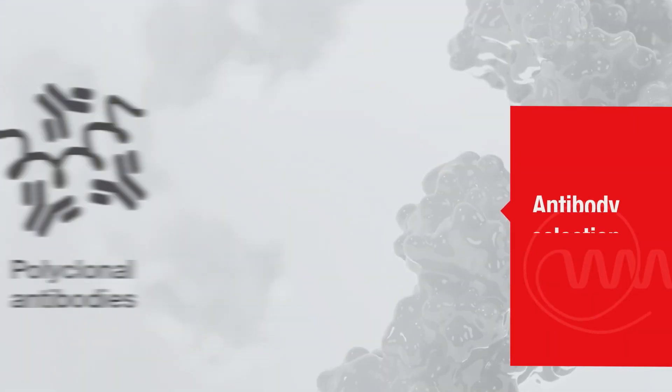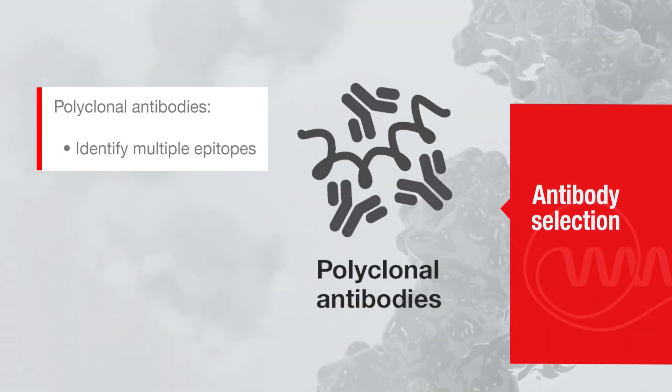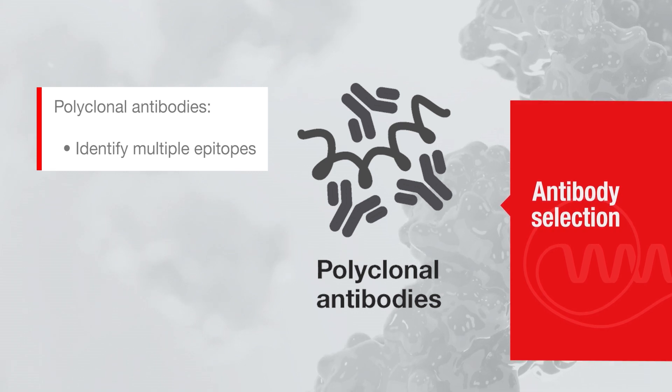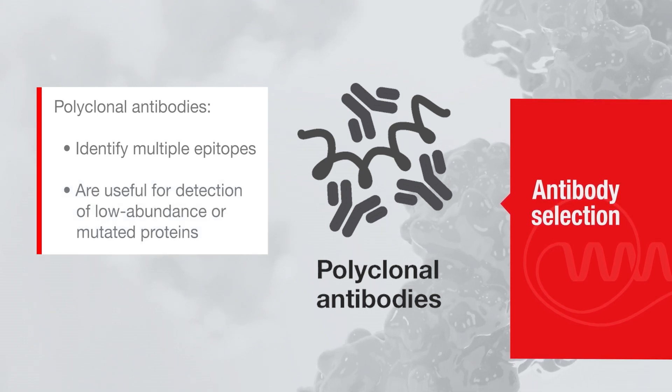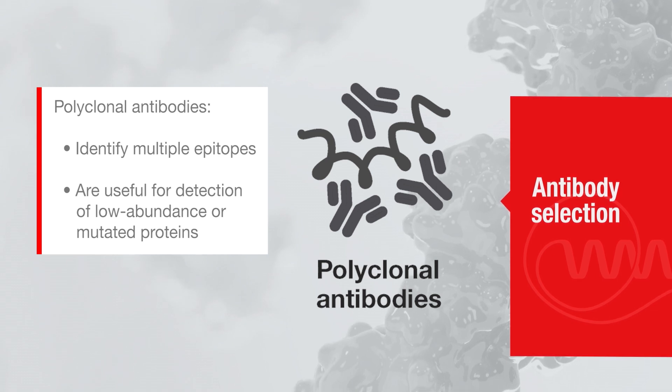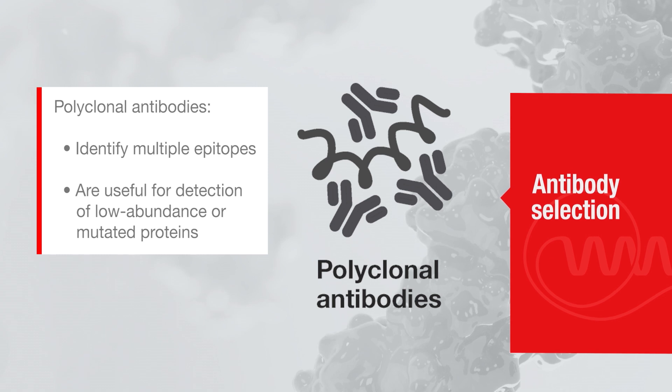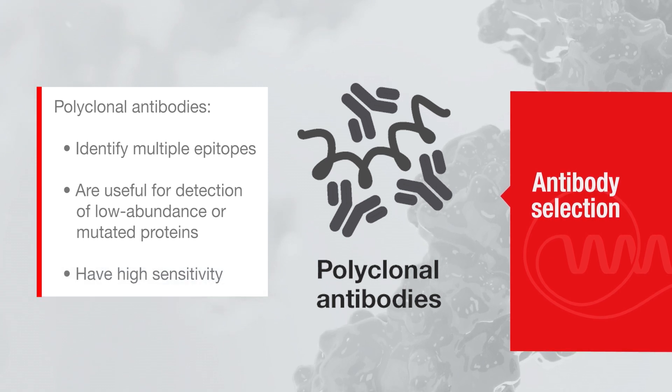It may be useful to consider how an antibody may recognize epitopes on the target protein and which species it is raised in. You can use this information to choose an antibody best suited for your Western blotting experiments. Polyclonal antibodies identify multiple epitopes on an antigen. They enable quicker capture of the target protein and are useful in detection of low-abundance proteins or to identify mutated proteins. Polyclonal antibodies are generally considered to be more sensitive.